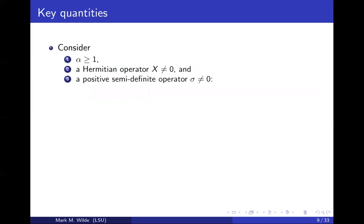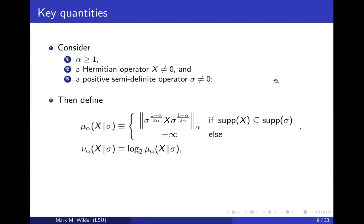To understand why this happens, we need to develop some mathematical quantities and establish some notation. Whenever we write alpha, we mean a real number greater than or equal to one, and we will consider the limit as alpha goes to infinity. We let X be a Hermitian operator, not equal to zero, and sigma is a positive semi-definite operator. When we write mu_alpha(X, sigma), we mean this weighted alpha norm — also called Schatten alpha norm. We define it like this, and in this weighted alpha norm, when alpha is greater than one, you're actually taking an inverse of sigma.